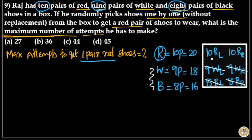After taking out all 34 white and black shoes — that is 18 white plus 16 black — he is left with 20 red shoes in the box.